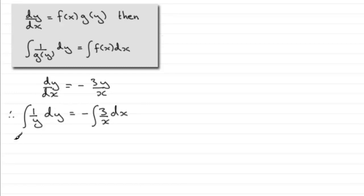The integral of 1/y with respect to y would be the natural log of y. If we integrate minus 3/x with respect to x, that is minus 3 times the natural log of x, and then we've got the constant of integration which I'll call plus c.